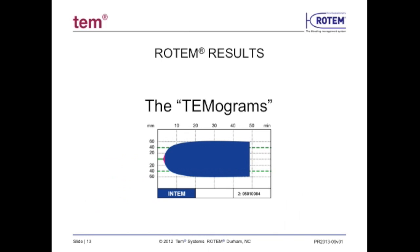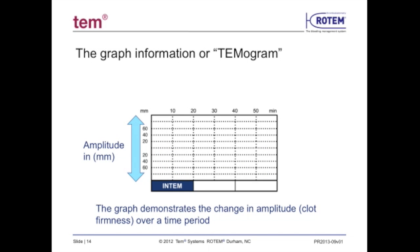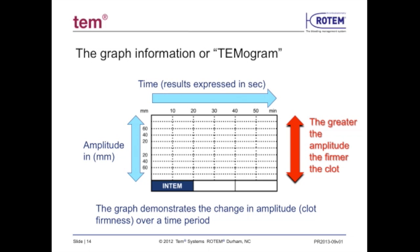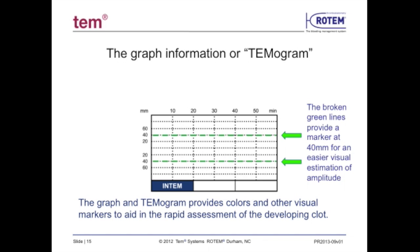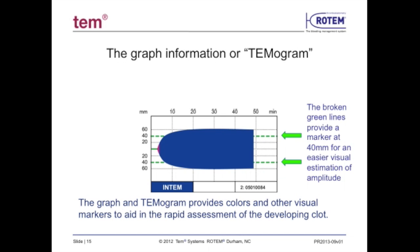The temogram develops on a graph which measures the increase in amplitude — relating to clot firmness — over a period of time measured in seconds. The greater the amplitude of the tracing indicates greater firmness or strength of the blood clot. Each graph will indicate which assay is being run. The graph adds visual markers such as green broken lines at the 40 mm mark as a reference point to compare with the actual amplitude developed.